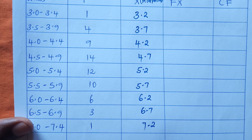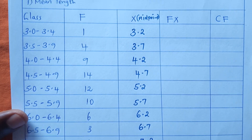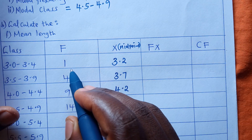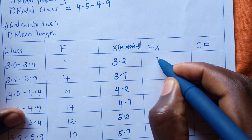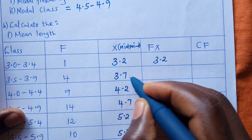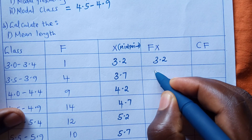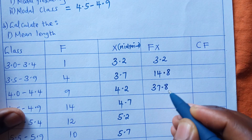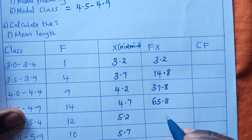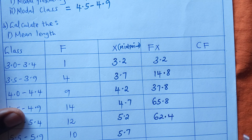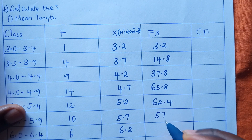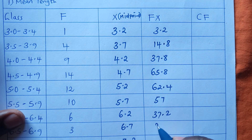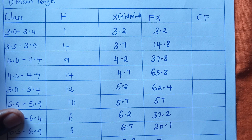For f of x, you multiply the frequency by the midpoint. So 1 times 3.2 gives 3.2; 4 times 3.7 gives 14.8. Continuing through all classes, the values are 37.8, 65.8, 62.4, 57, 37.2, 20.1, and 7.2.